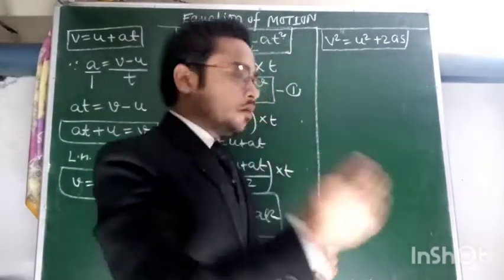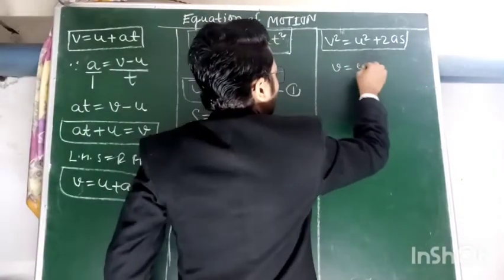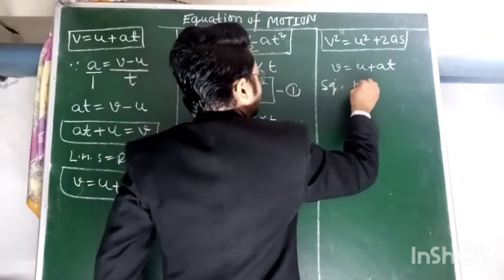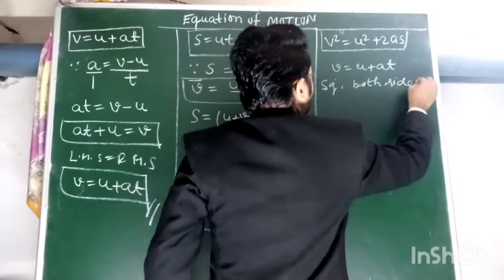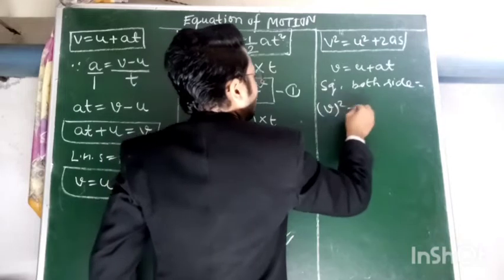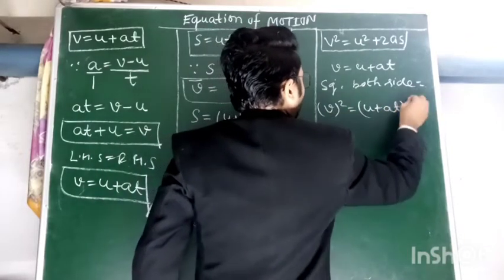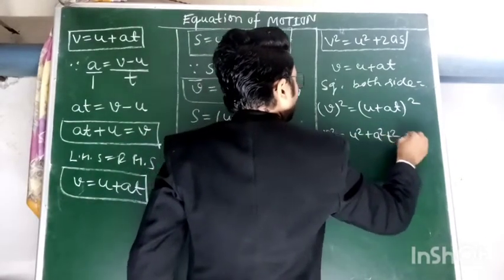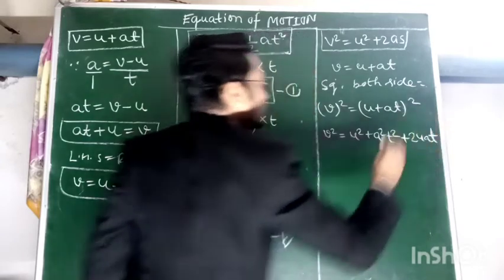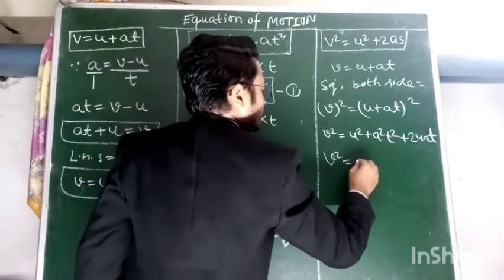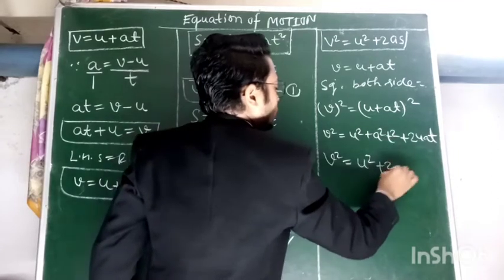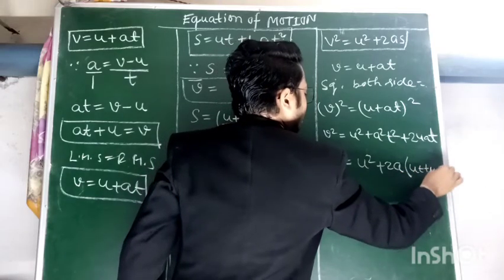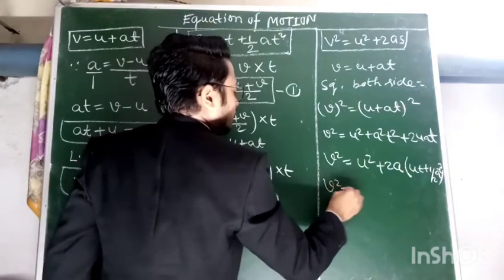It is known that V equals U plus AT. Squaring both sides, we get V square equals U plus AT whole square. V square equals U square plus A square T square plus 2UAT. V square equals U square plus—we will take common 2A—and we will get UT plus half AT square. V square equals U square plus 2A, and this is the value of our displacement S. Hence proved.